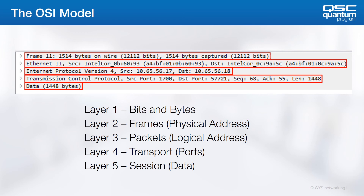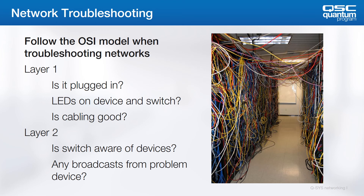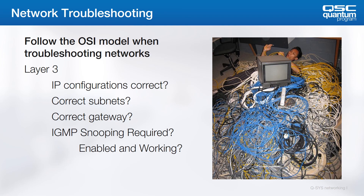When troubleshooting networking issues, thinking in terms of the OSI model is a good place to start. We start at Layer 1: is it plugged in? Do we have normal LED activity on the switch? Are we sure that the cabling is good and we have the expected connection speeds? At Layer 2, we might log into the switch and make sure that the switch is aware of the problem device. A quick PCAP capture might show if there are any broadcast-level packets from the device in question. If you can see the device, check the Layer 3 configuration: does it have the right IP, subnet mask, and gateway assignments? Is this a case where IGMP is going to be required? If so, is it enabled and is it working?